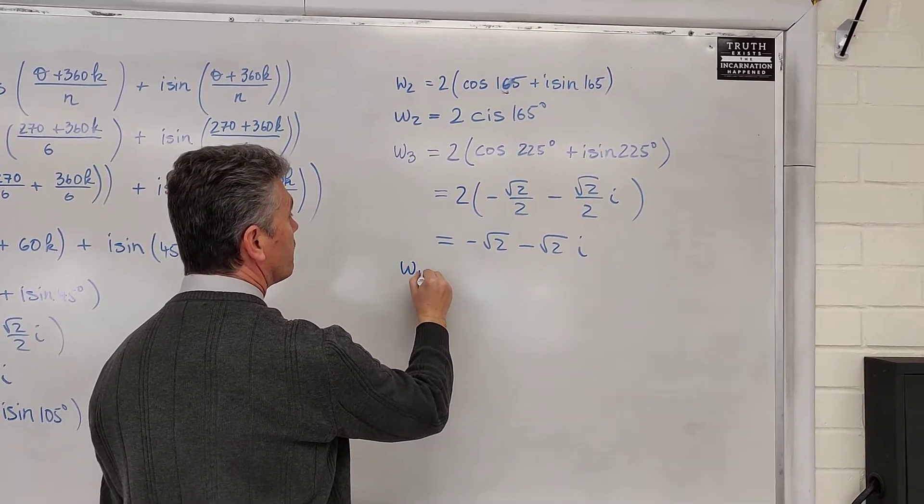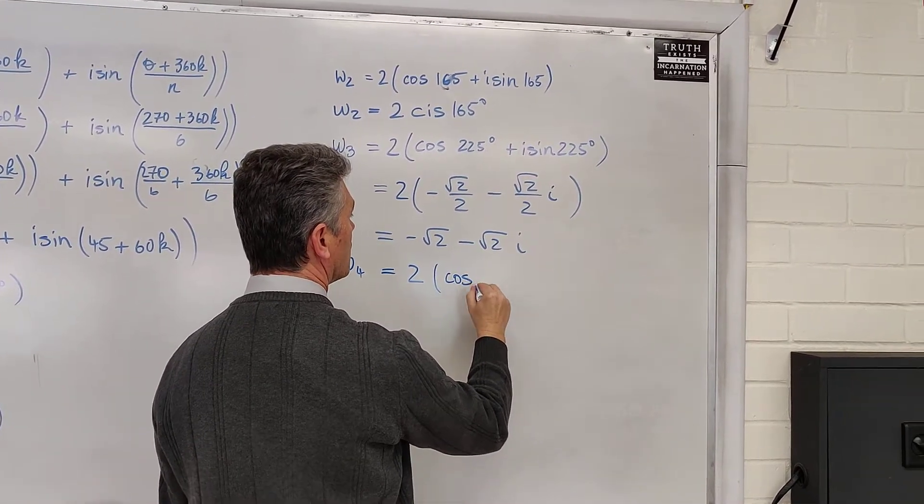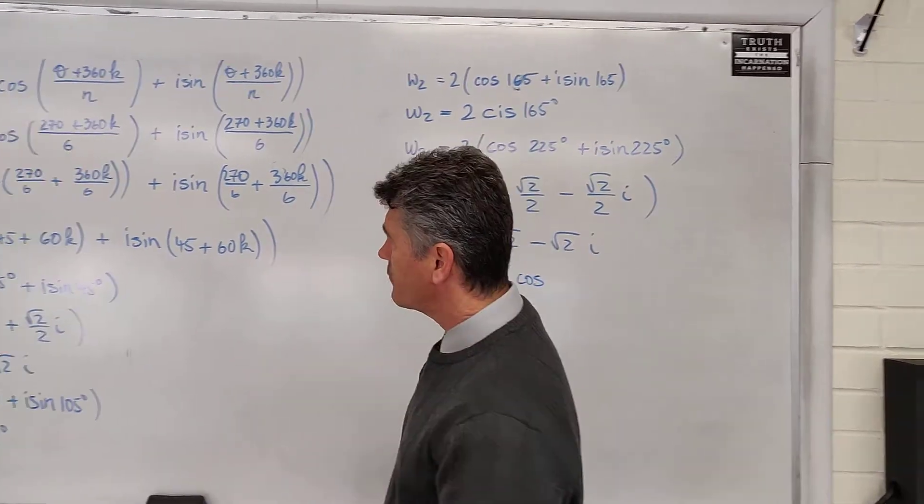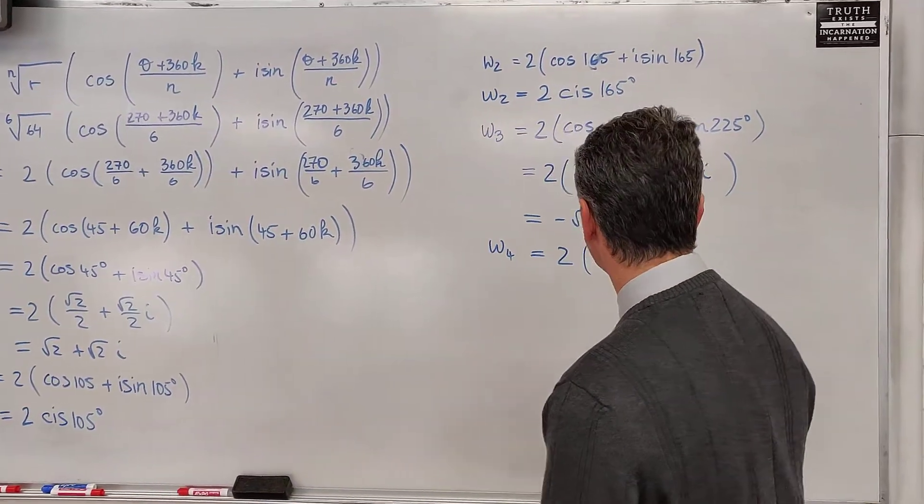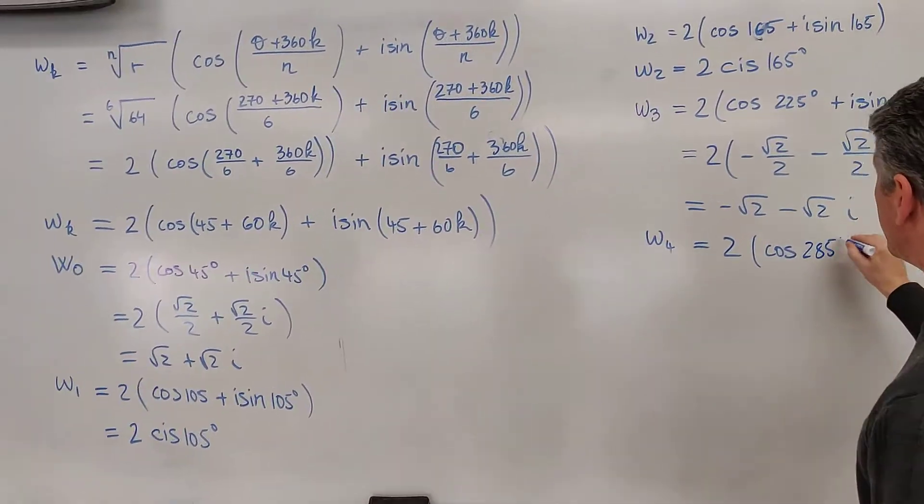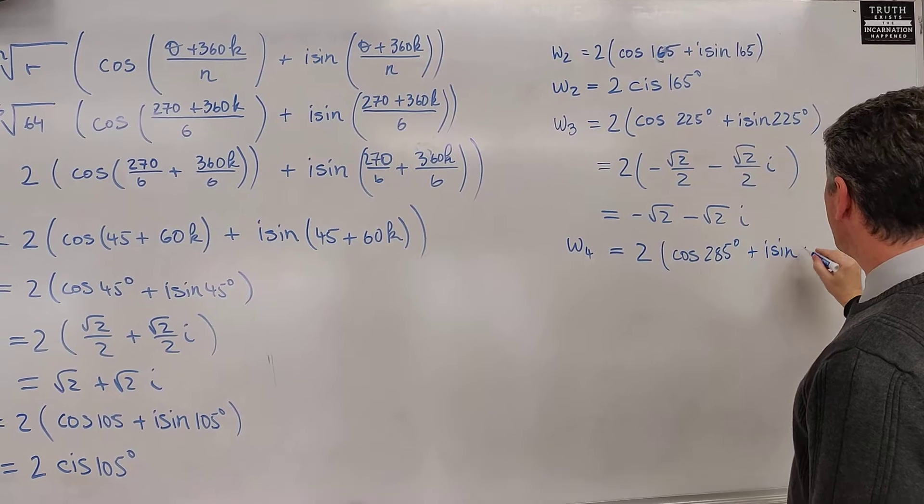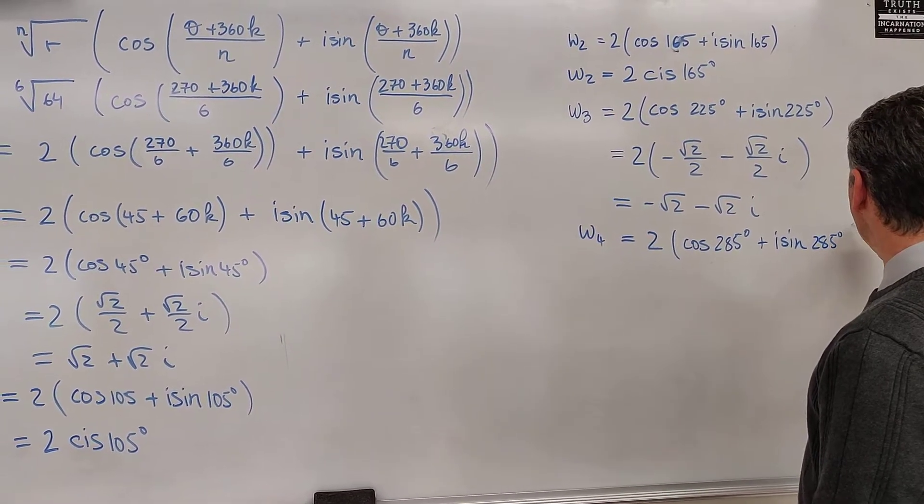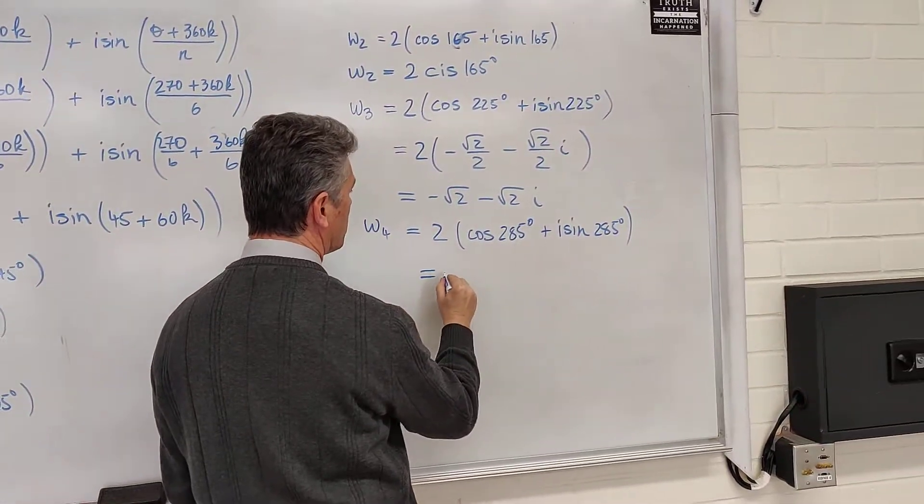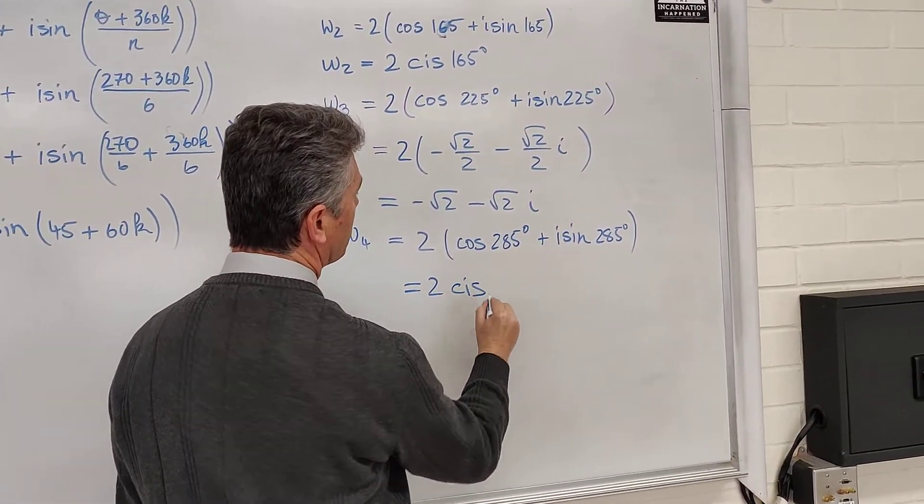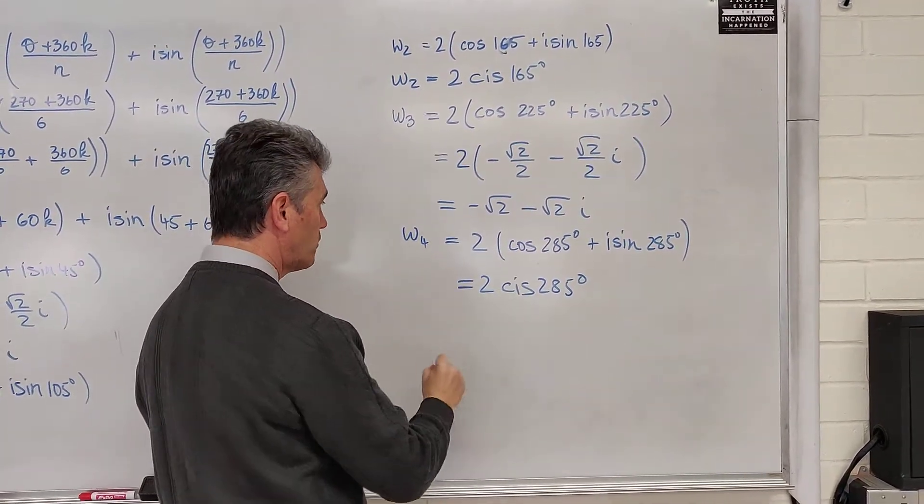So, w sub 4 is 2 times cosine of 285 plus i sine of 285. Again, if we're lucky, the reference angle would be 75 degrees. There's nothing more than we can do, just leave the answer in the form 2 cis 285. Or, you can leave it in the original form.